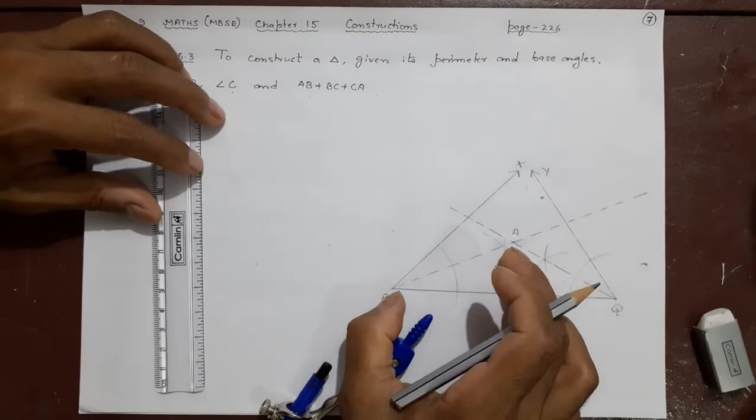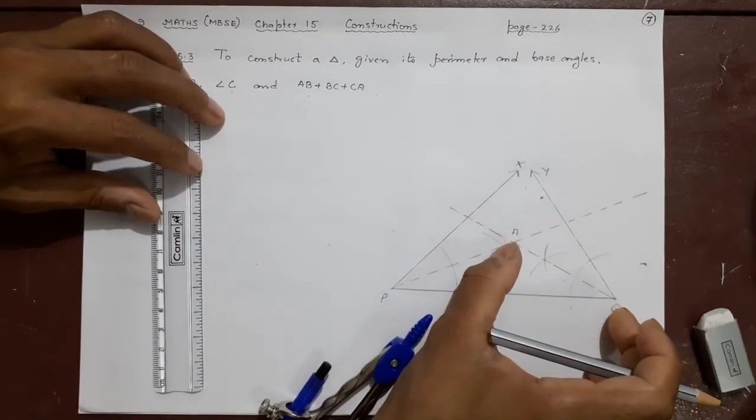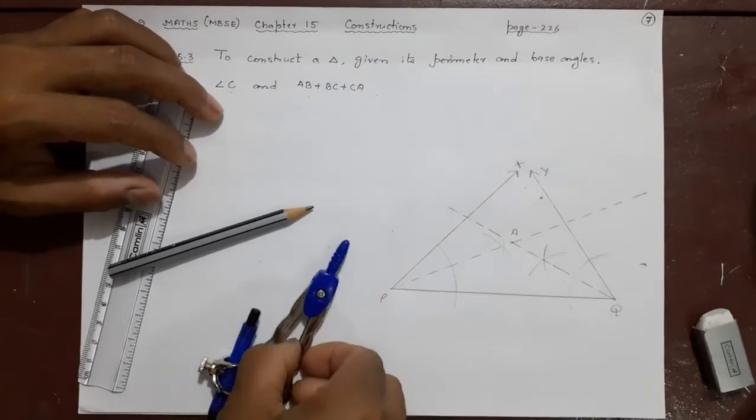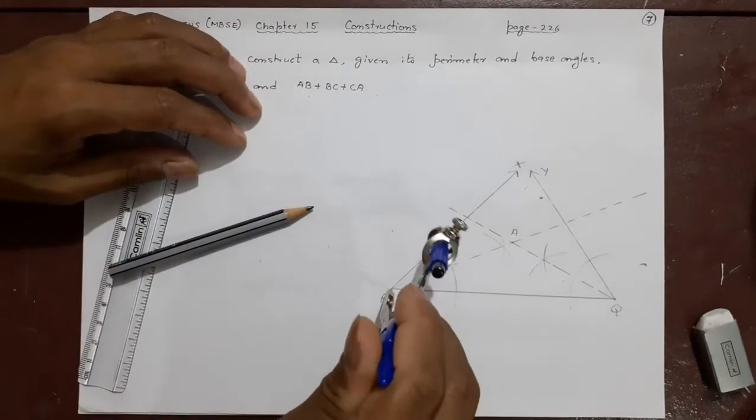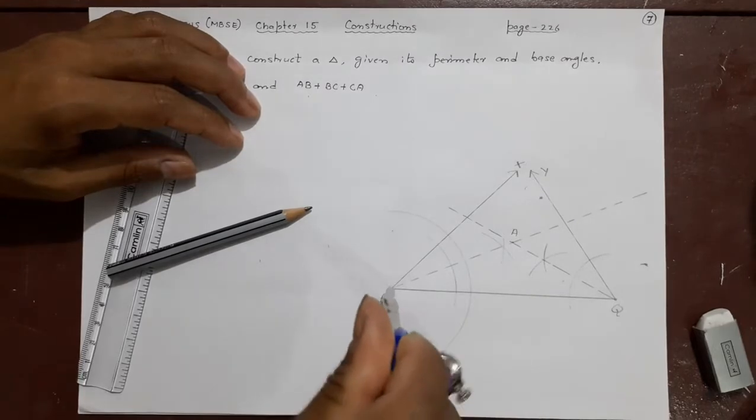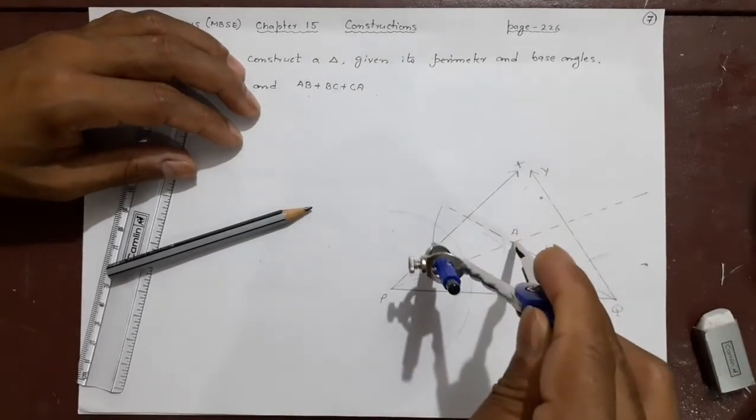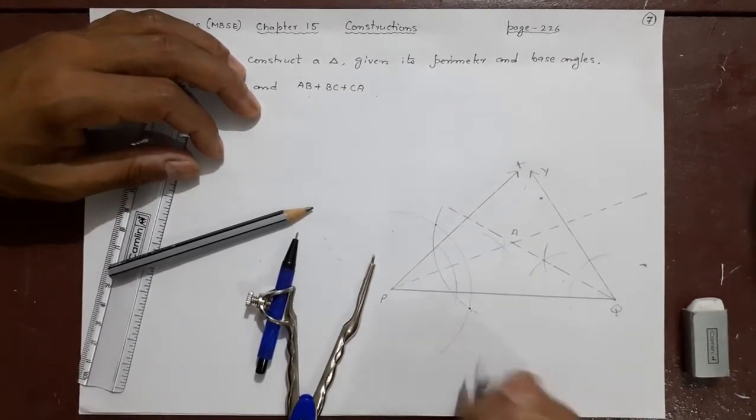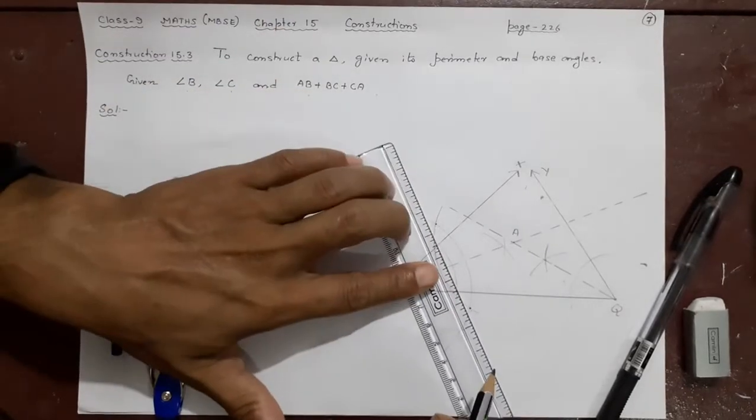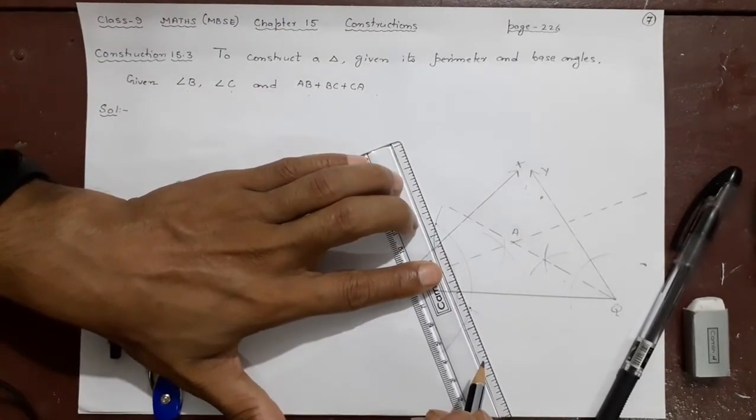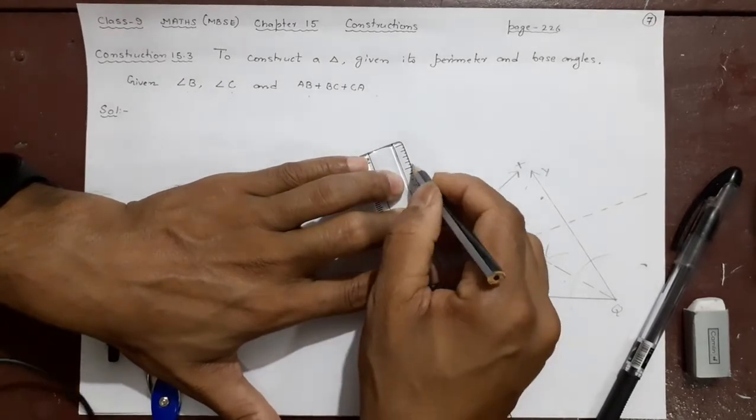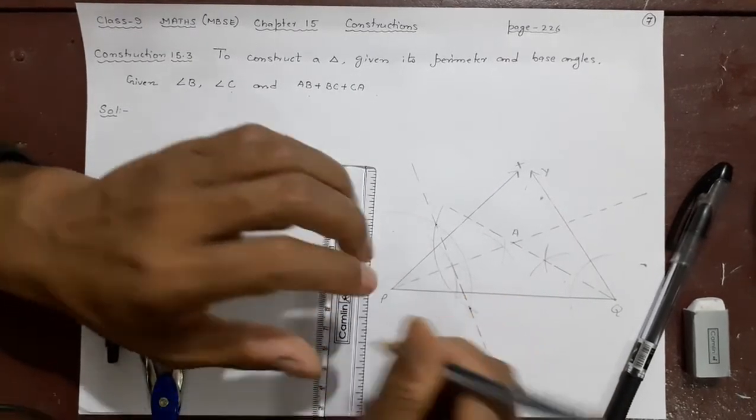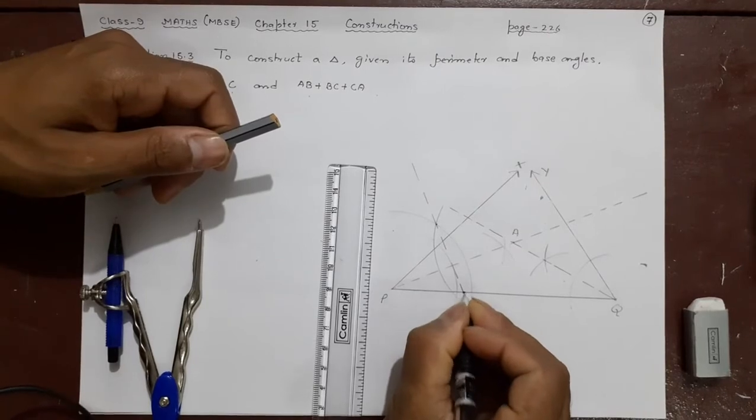And now what is the next job is, you will bisect AP and you will bisect AQ. And wherever they cut, at that time you will see B and C. Very easy. Next step will be bisecting this side AP. What is side bisecting? How we do this? Taking more than half, putting it here. Taking the same. Do this. Where to join? Here and here. This will tell you where should be your B. Make sure it cuts here. Here is this point. This point will be your B.